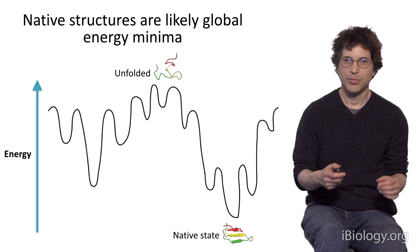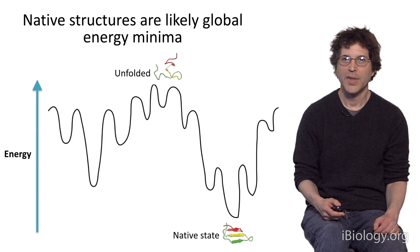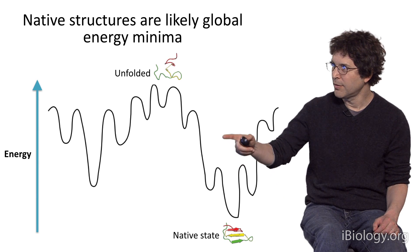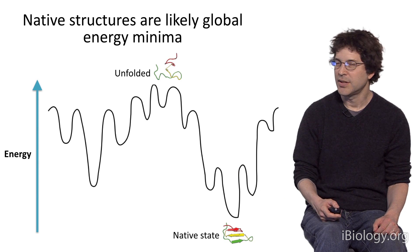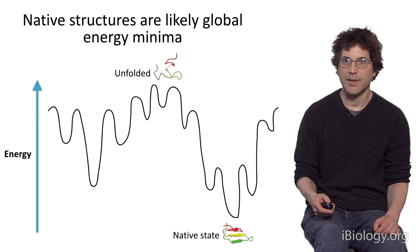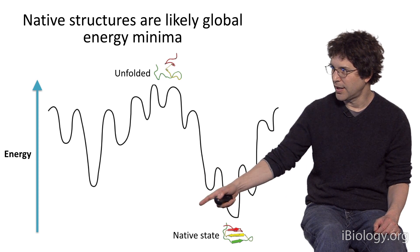For each amino acid sequence of a protein, there corresponds an energy landscape, of which I've shown a cartoon here, and there are many different possible conformations a protein can have. The native state of a protein is the lowest energy state, what I've shown here.